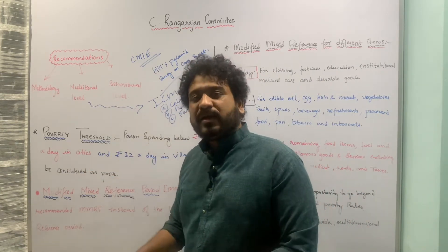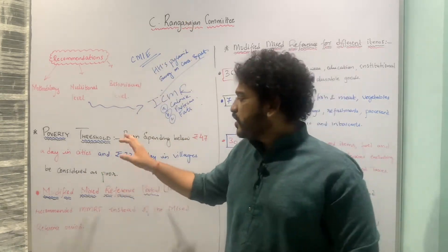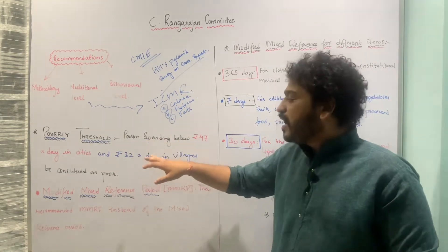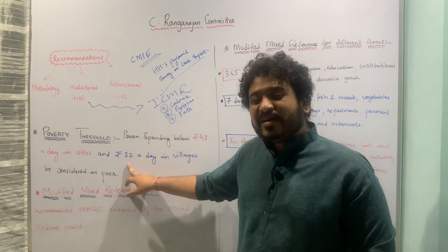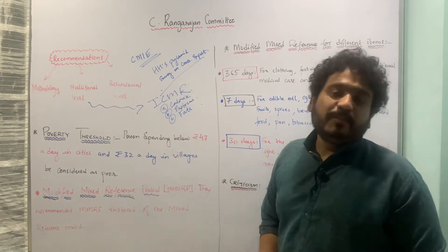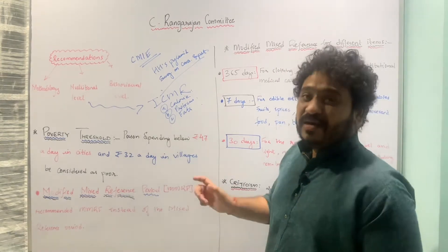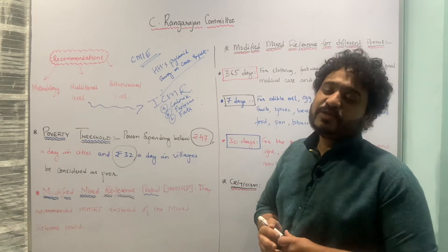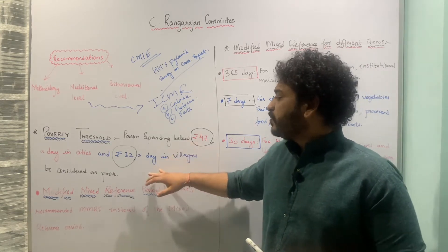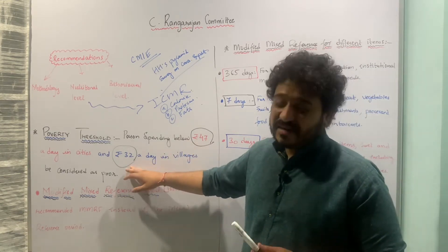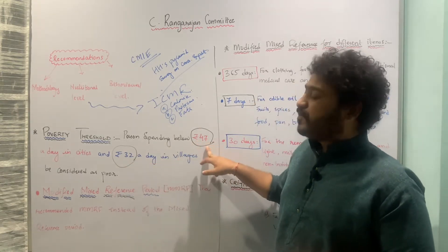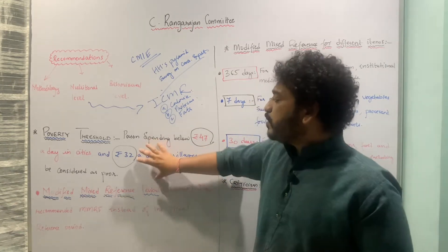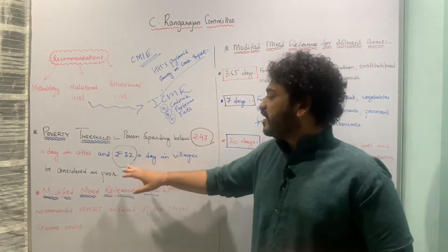In today's class, let us look at the poverty threshold according to the Rangarajan formula. It was established that a person spending below rupees 47 in an urban setup and a person spending below rupees 32 in a village was considered to be poor. This was a new way to estimate poverty according to the Rangarajan formula, and anyone spending less than rupees 32 in a village or rupees 47 in a city was considered poor.